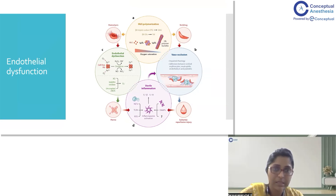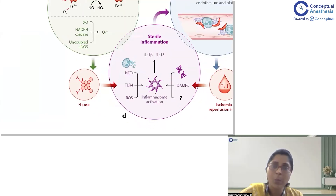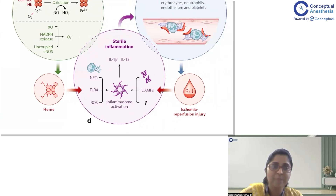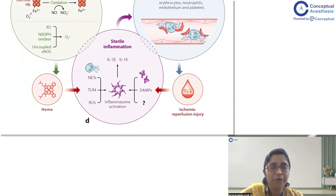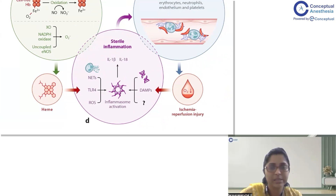The last pathophysiological process is sterile inflammation, occurring because of ischemic reperfusion injury and free heme molecules. Free hemoglobin in the blood also incites a sterile inflammatory response via interleukin-1-beta and interleukin-18, triggering inflammasome activation and leading to sterile inflammation throughout the blood vessels of these patients.